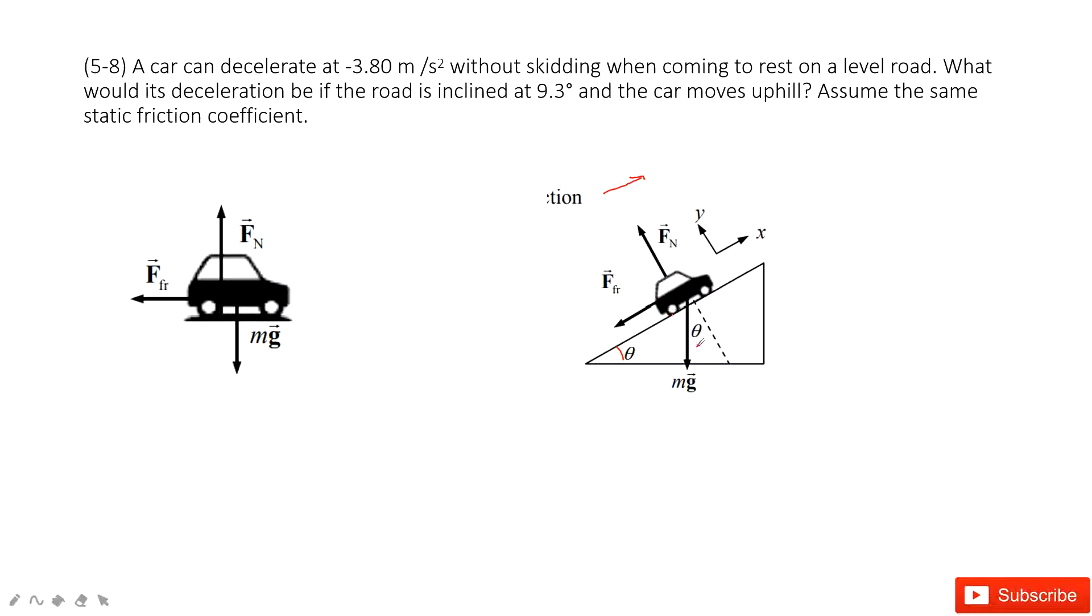In this one, we project the gravity into the x-component and y-component. We have mg cos theta and mg sin theta. Then we consider Newton's second law to apply to find the acceleration. Because we need to find deceleration, so we find acceleration.